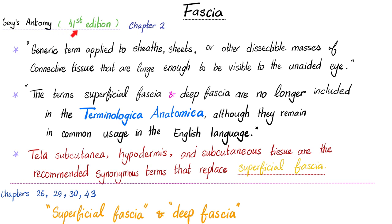Now let's look at this from Grey's Anatomy, 41st edition, chapter 2. Grey's Anatomy tells us: fascia is a generic term applied to sheets or other dissectable masses of connective tissue that are large enough to be visible to the unaided eye. The terms superficial fascia and deep fascia are no longer included in the Terminologia Anatomica, although they remain in common usage in the English language. Tela subcutanea, hypodermis, and subcutaneous tissue are the recommended synonymous terms that replace superficial fascia.